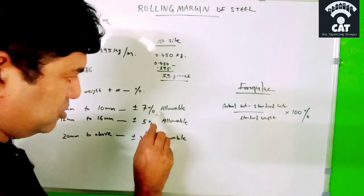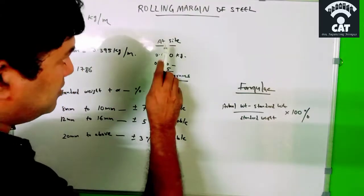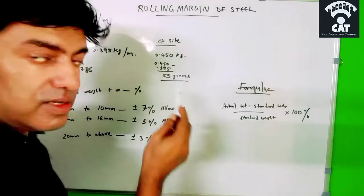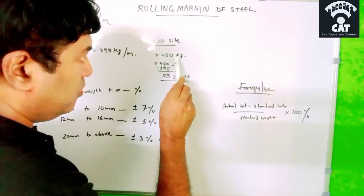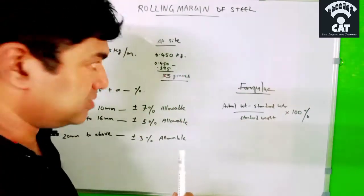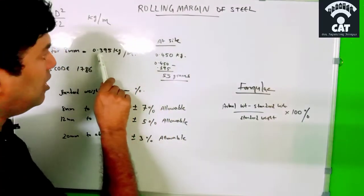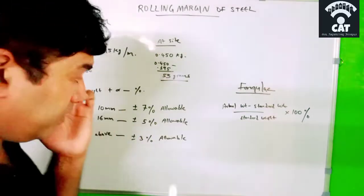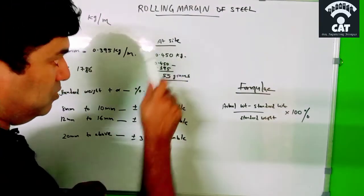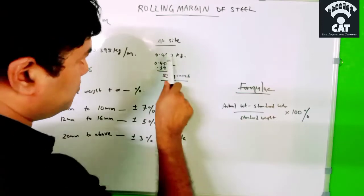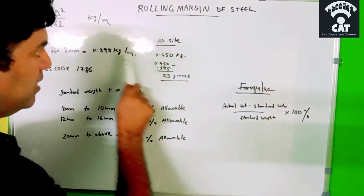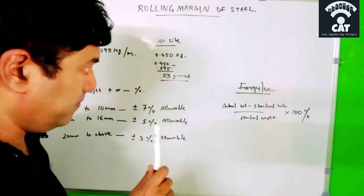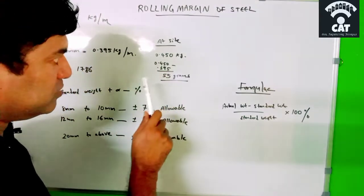That means if the outside is the same 8mm bar, when we weigh the bar it comes to, say, 0.450 kg — just take it as an example. The standard weight is 0.395, but at site when we cut the bar to one meter and weigh it on the machine it comes to 0.450. So what is rolling margin? Rolling margin is 0.450 minus 0.395, which is 0.055 kilogram, or 55 grams.